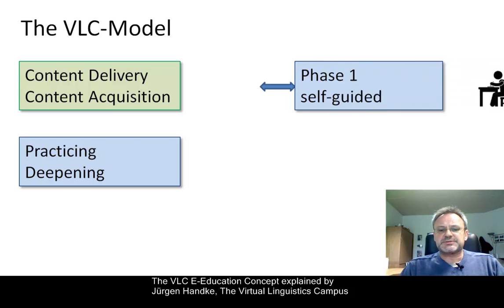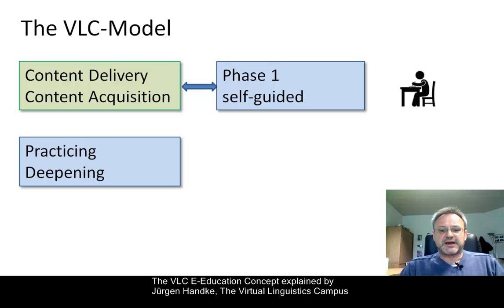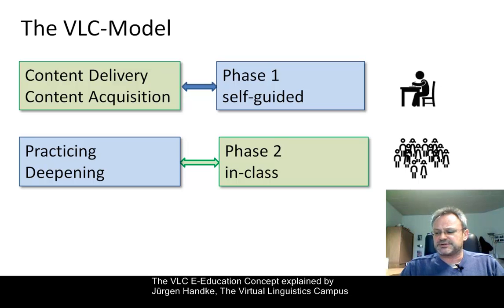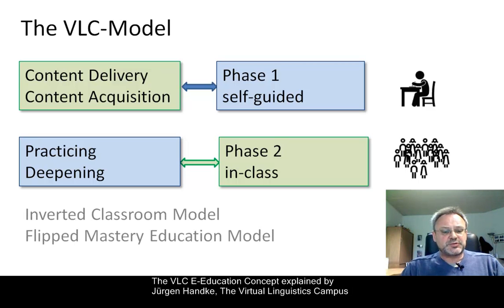We will flip or invert these two activities and apply the inverted classroom model. Content acquisition is now self-guided, takes place first, and is done online. The additional in-class phase is now dedicated to practicing, rehearsing, discussion, analysis, etc. This means prior to each in-class meeting, students must have worked through the online content of the respective unit. This approach is referred to as the inverted classroom model or the flipped mastery educational model.